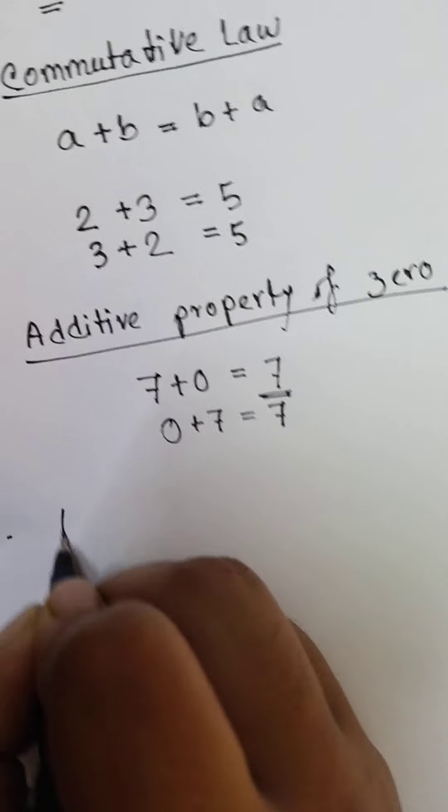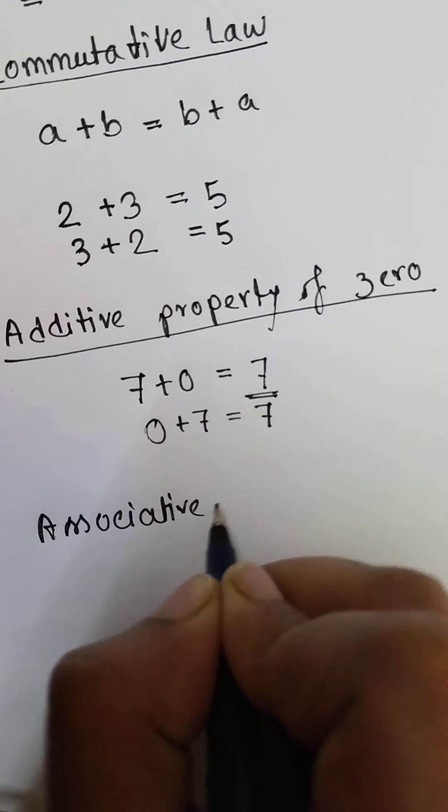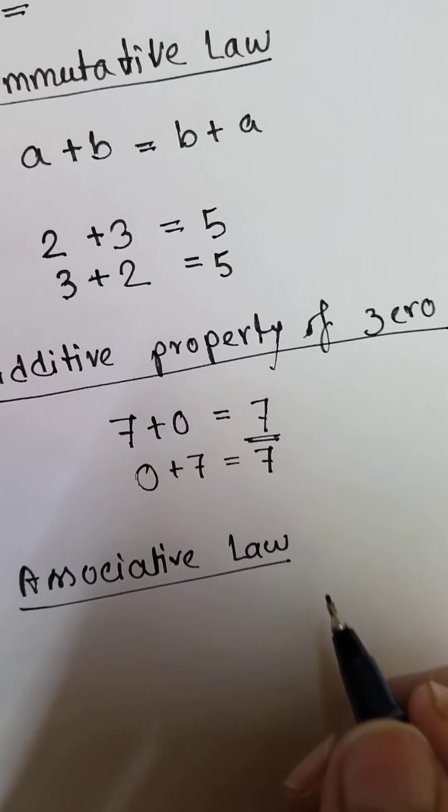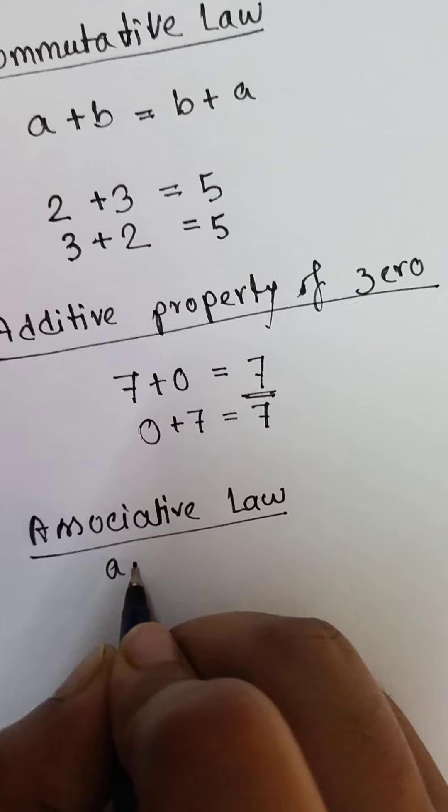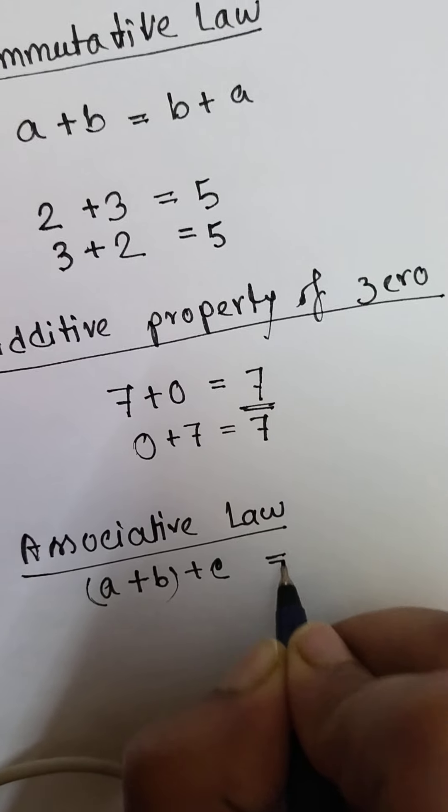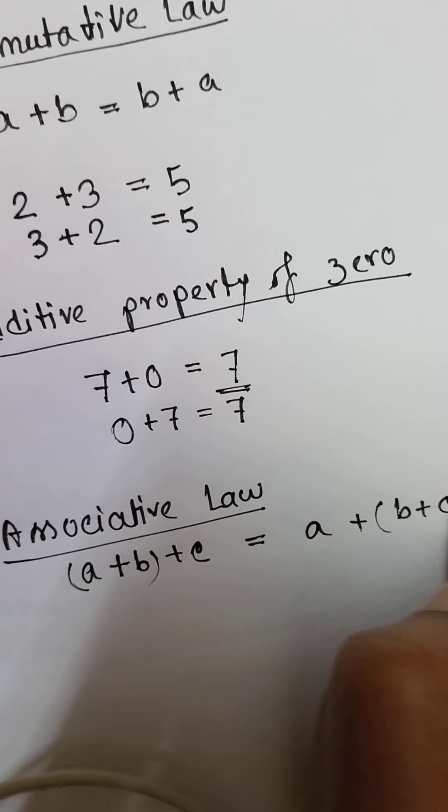Coming to the next is associative law. What is this? For any whole numbers like a, b, c: (a plus b) plus c equals a plus (b plus c).